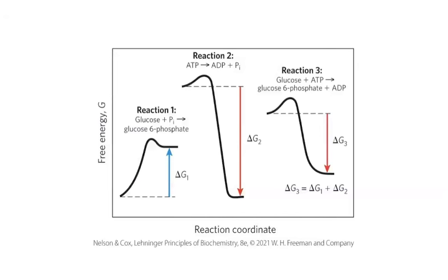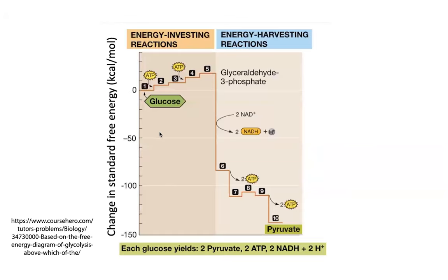Sometimes we want reactions that are so energetically favorable that they're basically irreversible. Although nothing is technically irreversible, there are some reactions we consider basically irreversible because the change in free energy is so great that you can't easily go backwards. We'll see a few examples of these, which serve as important regulatory points through metabolic pathways — if you can control those go/no-go points, those points of no return, you can control the whole thing.